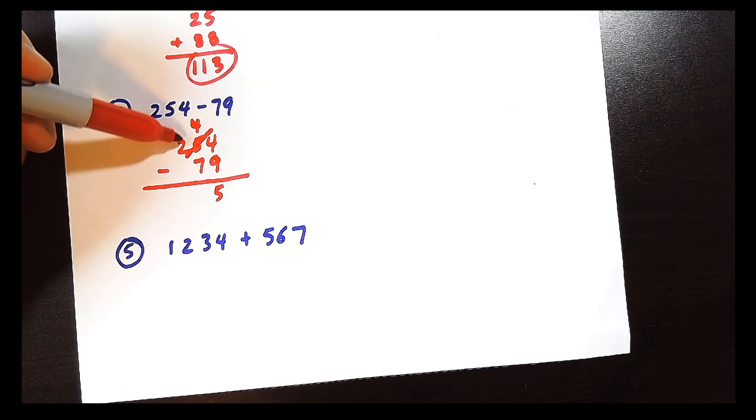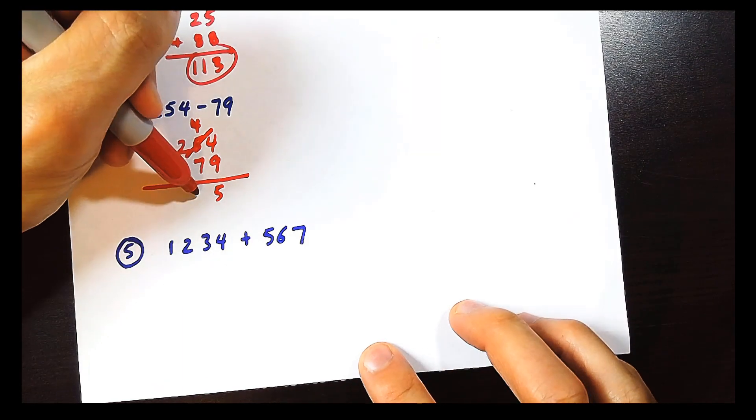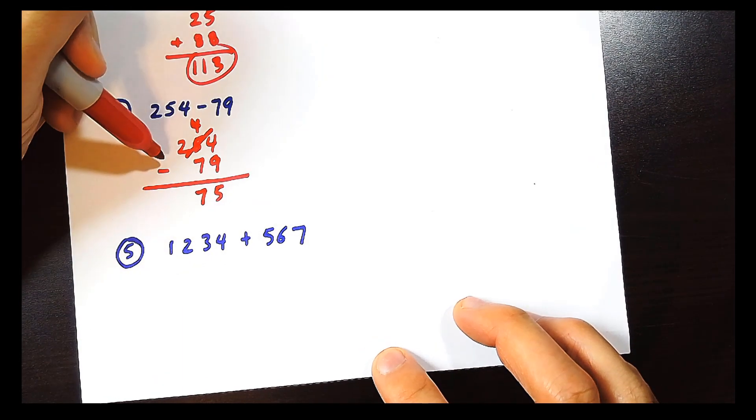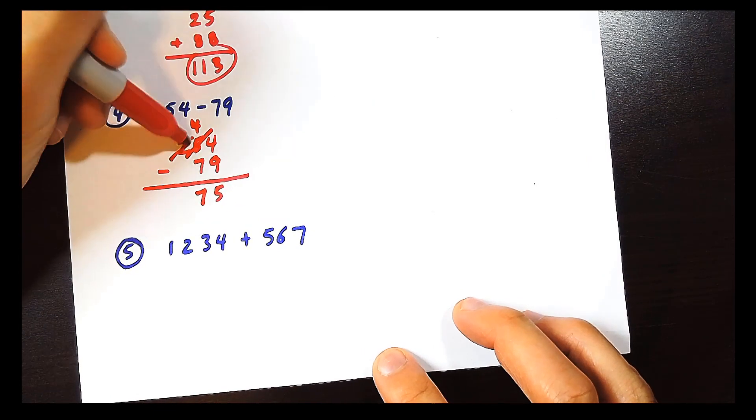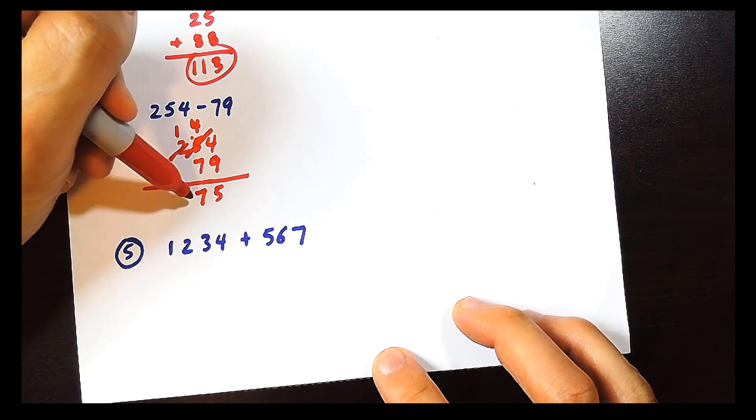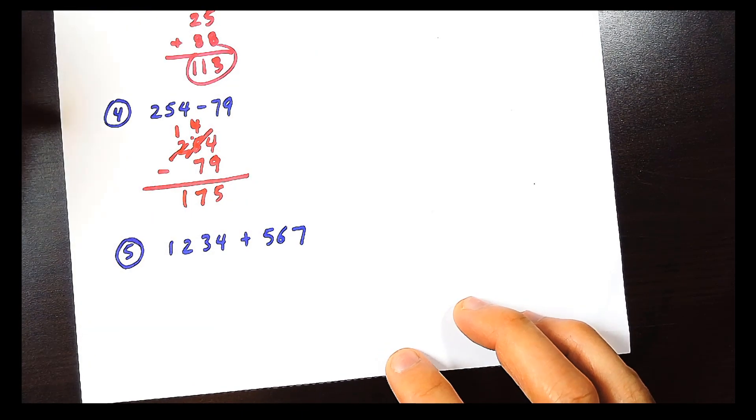So we can't do 4 minus 7 because you'll have a negative number. So we borrow energy again. So we treat this not like a 4, but a 14. 14 minus 7 would be a 7. And like we said, we borrowed energy, so the 2 becomes a 1. And then 1 minus nothing becomes a 1. So the answer is 175.